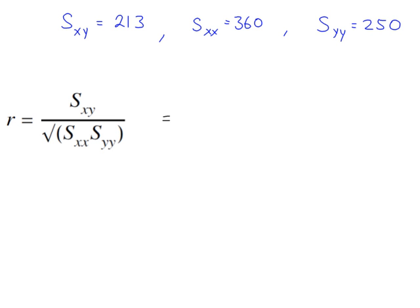In this example, we will use the formula to work out the PMCC value. Putting the numbers in. So that's got XY. There's XY, 213. And then we've got the square root in the denominator, and we're multiplying the X and the Y values there, so 360 times 250. And this value should be between minus one and plus one. If it's not, you've probably made a mistake by putting the values in the wrong places.